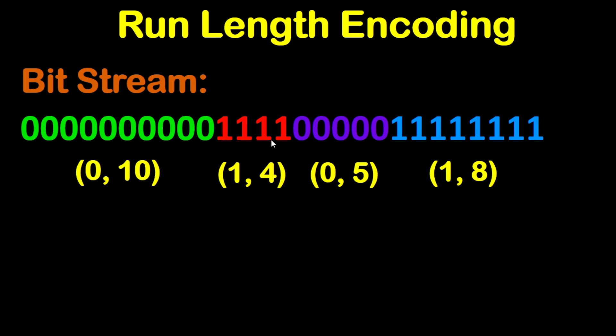Now for this group, since this is a group of ones, we are going to write 1 like this. Then the number of ones: 1, 2, 3, 4. We have 4, so we are going to write 4 like this.